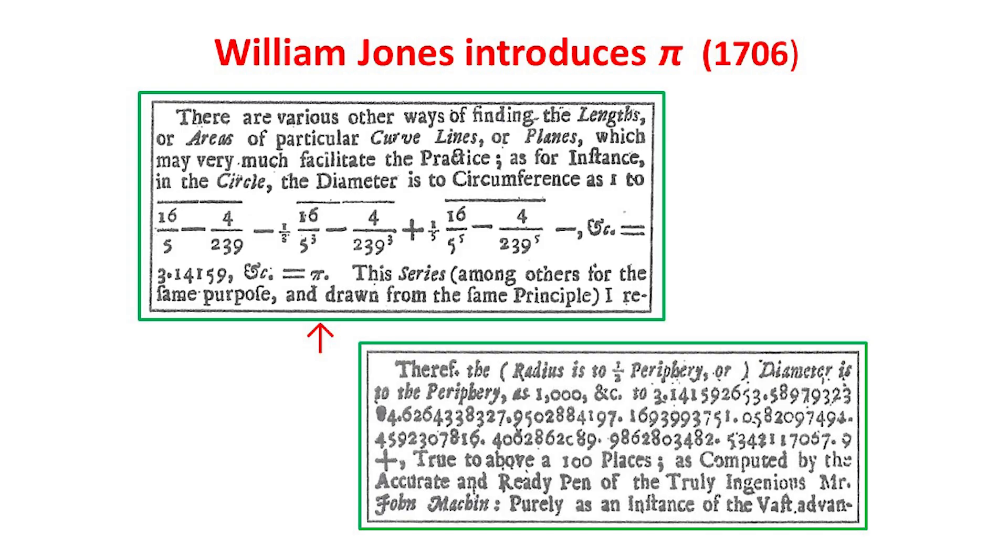Indeed, 1706 was a good year for pi. As well as Machin's remarkable result, a Welsh mathematics teacher called William Jones wrote a book in which he introduced for the first time the symbol pi for measuring circles. Here are two extracts from his book. Above, you can see Machin's series with its fives and 239s, followed by the first ever appearance of pi. And below is Machin's value for pi in full, described as true to above 100 places, as computed by the accurate and ready pen of the truly ingenious Mr John Machin.